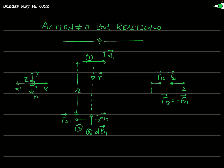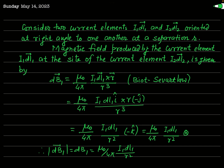We will find the magnetic force exerted by the first current element on the second. To do this, we first calculate the magnetic field produced by the first current element at the site of the second current element using Biot-Savart law. According to Biot-Savart law, this field is dB₁ = (μ₀/4π) · (I₁dL₁ × r̂) / r².